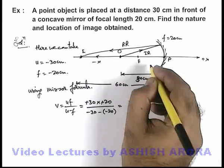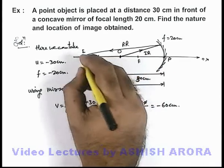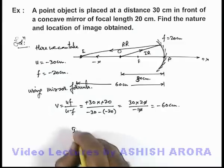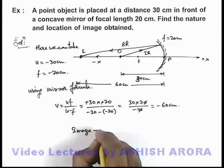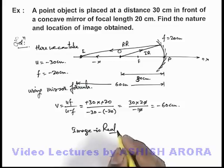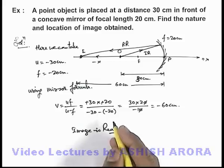corresponding to these incident rays are converging and meeting at the position of image. That means image is real, because corresponding to converging reflected rays, always image obtained will be real.